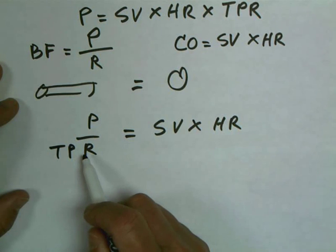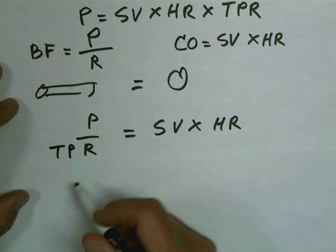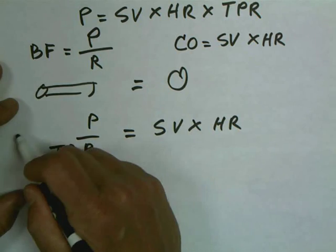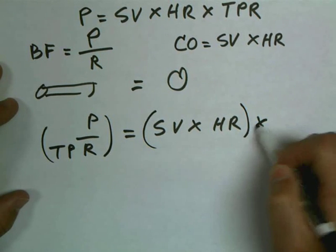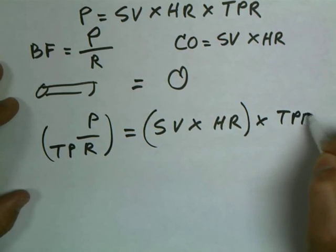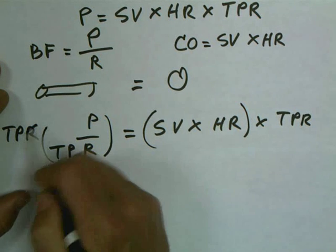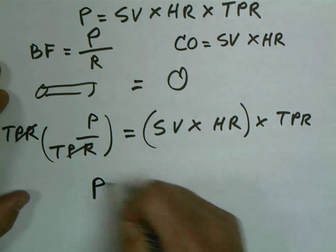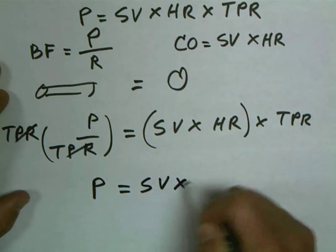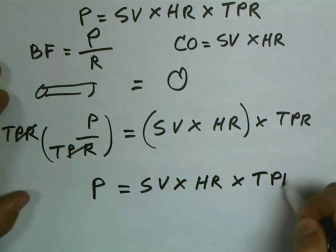I don't like this term TPR here in the denominator, so what we're going to do is multiply both sides of the equation by TPR to cancel it out. And when we do that, multiply both sides by TPR, TPR cancels out, because that's just one, and we're left with pressure is equal to stroke volume times heart rate times total peripheral resistance.